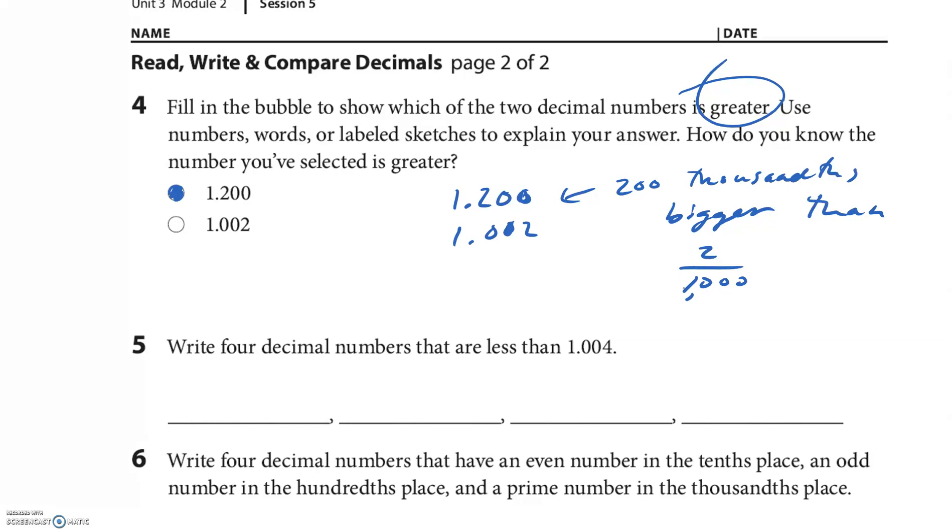Okay. I forgot to remind you to pause it. Hopefully, you did. I'm going to change the colors because I'm tired of looking at the red. All right. Here we go. Second page. Let's see how this side goes. Fill in the bubble to show which of the two decimal numbers is greater. So, we want greater. Use numbers, words, or labeled sketches to explain your answer. How do you know? Well, you try it. I think it's this one. And I would say that if I just stack these on top of each other. Well, that's a zero, zero, two. That's a zero. I would say that 200 thousandths is bigger than 2 thousandths, right? Bigger. Well, I'm going to write this next one as a fraction. Bigger than, greater than, 2 one thousandths. I could have wrote it that way.